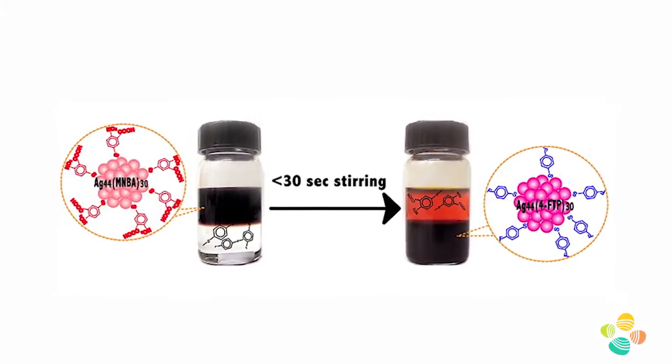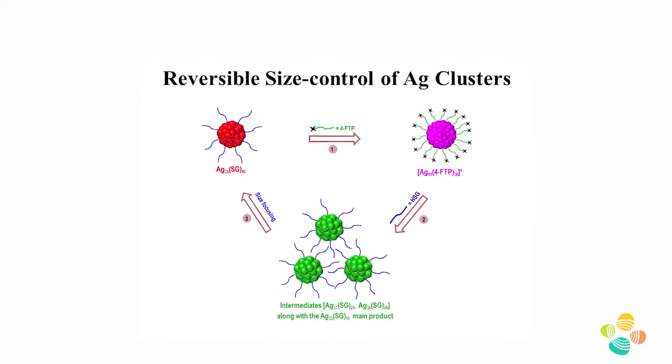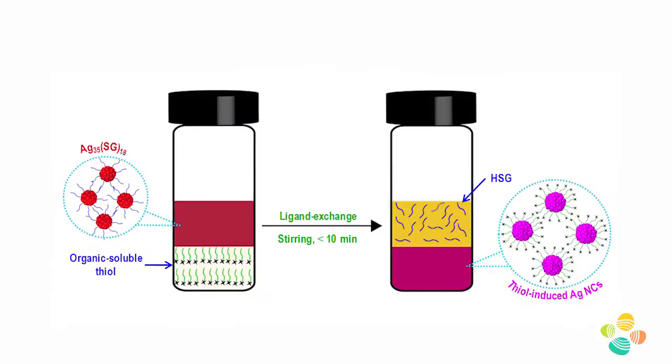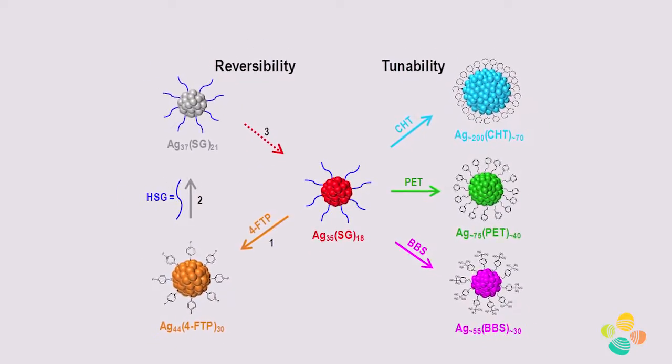We used a variety of thio ligands to obtain different size clusters. We obtained organic soluble silver clusters ranging from silver 35 to silver 200. We adopted this ligand exchange methodology to explore the landscape of silver clusters by changing the ligand structure.